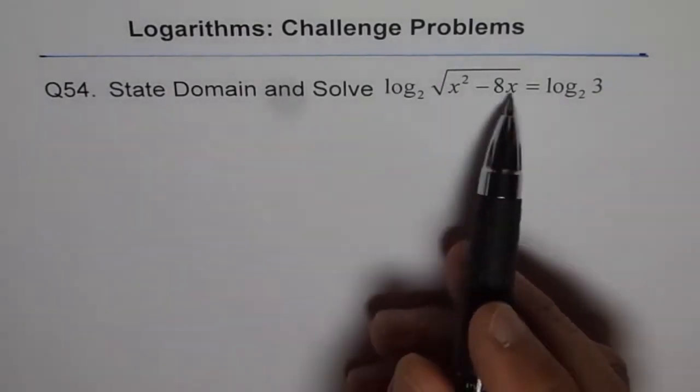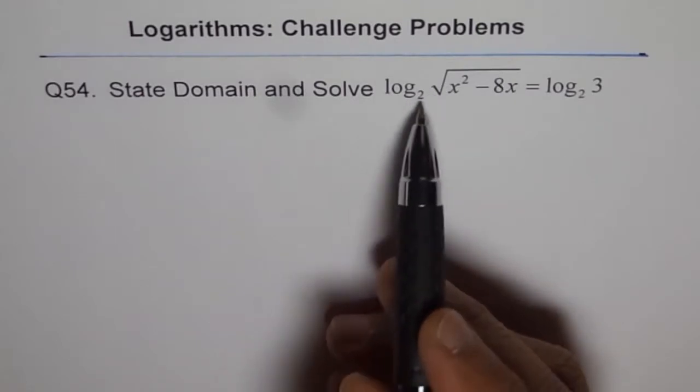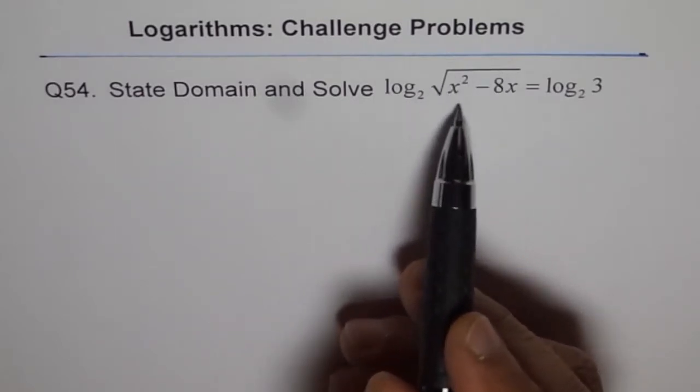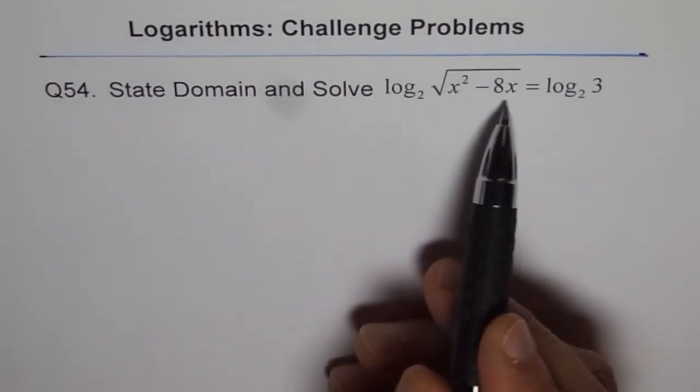To find the domain of this function, we know square root is always positive. Now, within the square root, our function should be greater than or equal to 0, right?